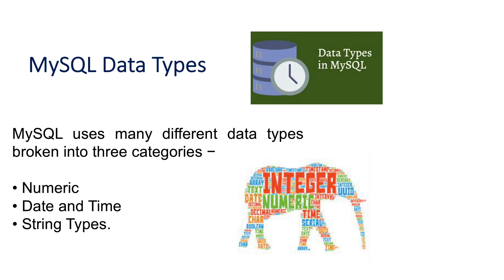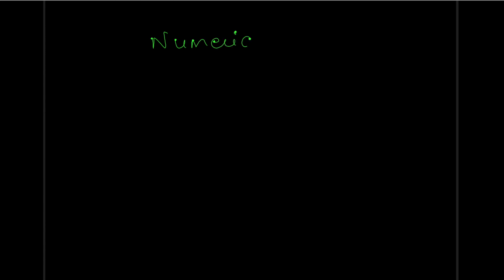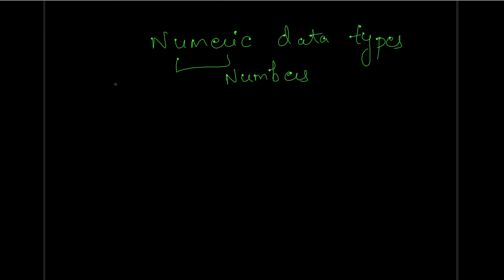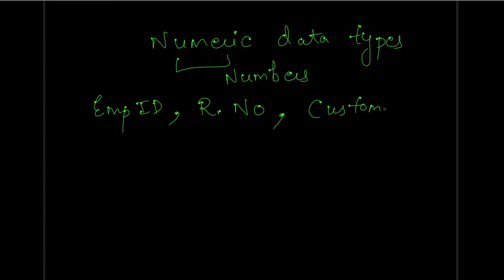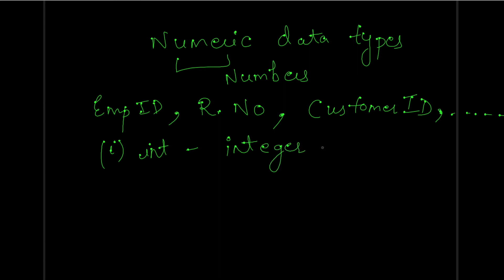Let's discuss all three data types one by one. First, numeric data types — numeric means numbers. If you are storing any data in the form of numbers, it would be stored as a numeric data type. For example, employee ID, roll number in a school or college, and customer IDs are all stored as numeric data types. The first numeric type is INT (integer), which stores up to 11 digits.